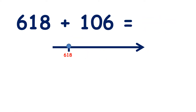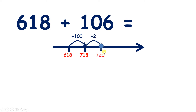Now we have 618 plus 106. If we add 100, that takes us to 718, and now we need to add our 6 units. Two more units takes us to 720, so now we need to add four more units.